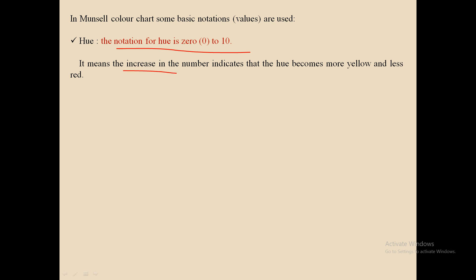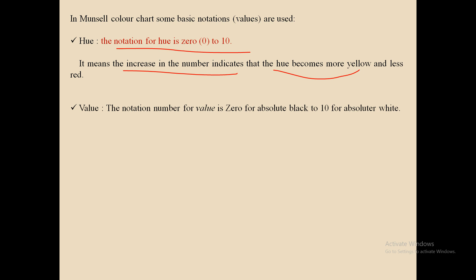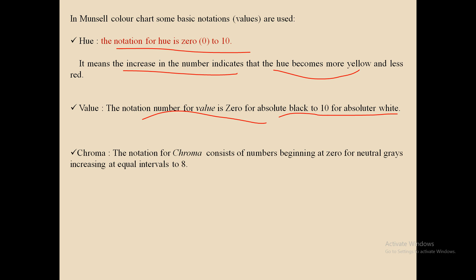An increase in hue number indicates that the hue becomes more yellow and less red — so at 0 it represents red, and as the value increases toward 10, the color moves toward yellow. For value, the notation number 0 represents absolute black, and 10 represents absolute white. For chroma, the notation consists of numbers beginning at 0 for neutral gray and increasing at equal intervals up to 8.